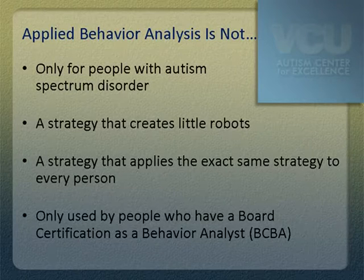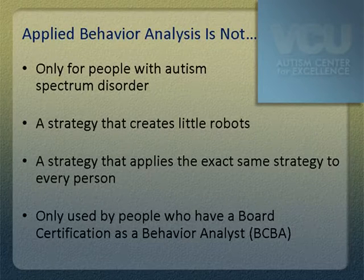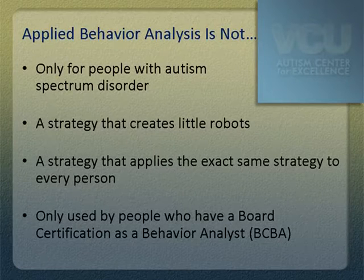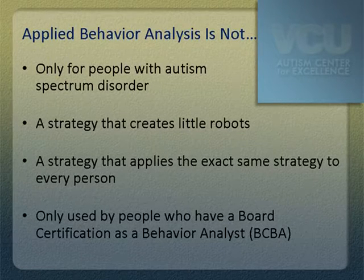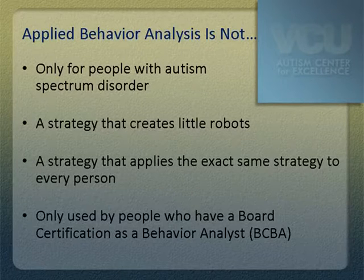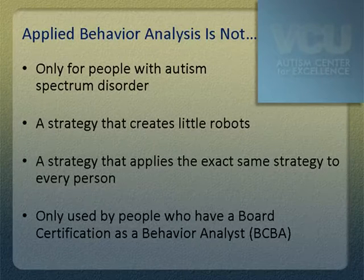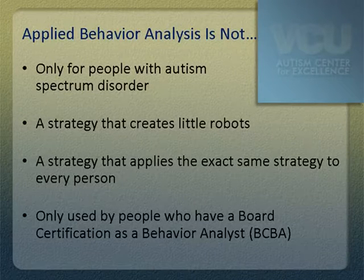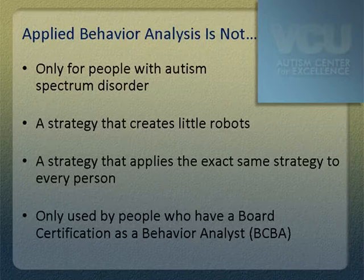Number two: ABA is not a strategy that creates little robots. I have heard this a number of times. ABA is like any other strategy we employ with individuals with autism. If we don't plan for generalization, if we don't teach different materials in different environments in different ways, yes, behavior might be somewhat mechanical — but that's a function of bad teaching, not ABA.